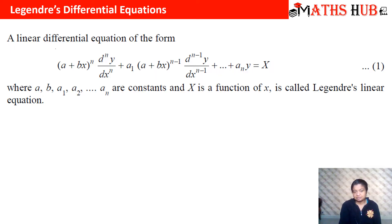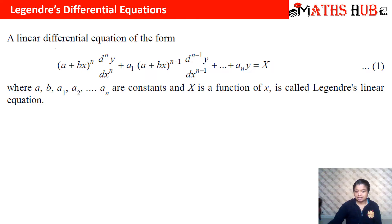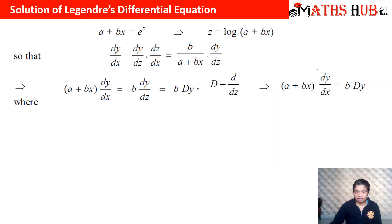In Cauchy-Euler we were substituting x as e^t. Now here we will be substituting (a + bx) equal to e^z, so that all these linear terms get converted to constant coefficients. So we put (a + bx) = e^z, which gives z = log(a + bx).